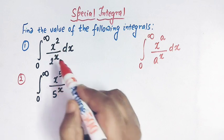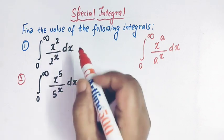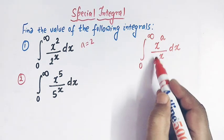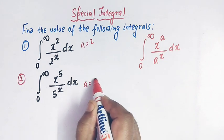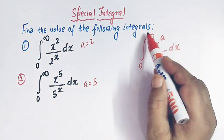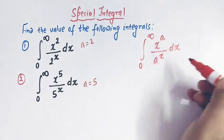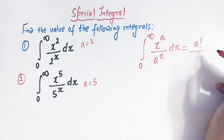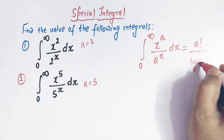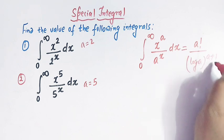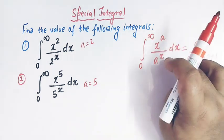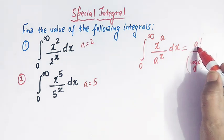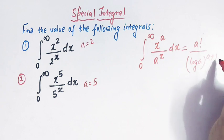In the first integral the value of a is 2, and in the second integral a is equal to 5. The direct value of this integral can be written as factorial a divided by log of a raised to a plus 1. So the direct formula is: a factorial divided by (log a)^(a+1).